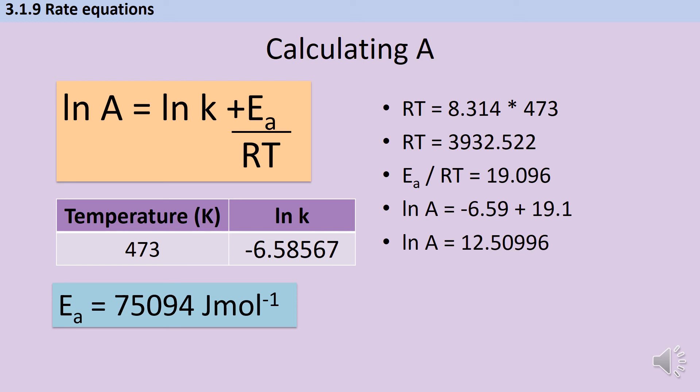And to work out what A is, if I know what the natural log of A is, then I need to put e to the power of that. And that gives me an answer for A of 2.79 times 10 to the 5. And then I know that my units for A are the same as my units for k. And although I'm not actually showing them on this slide, we did have them earlier in the table. And in this instance, it's going to be moles to the minus one decimetres cubed seconds to the minus one.